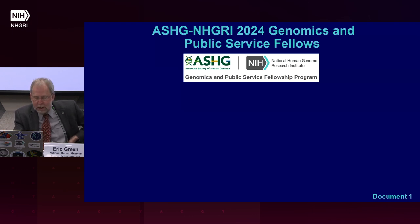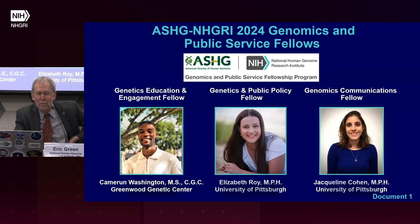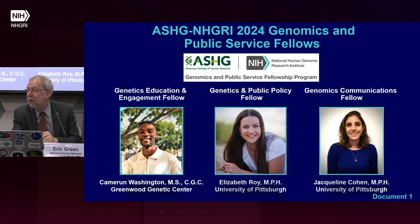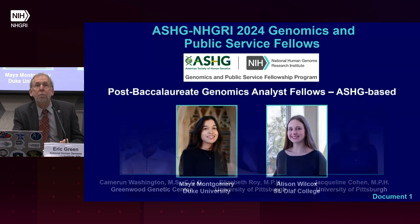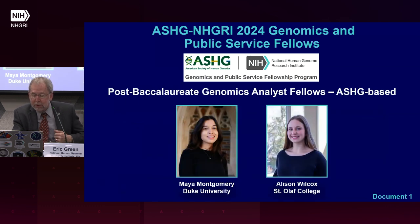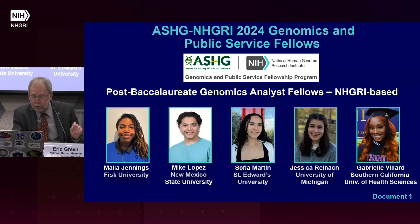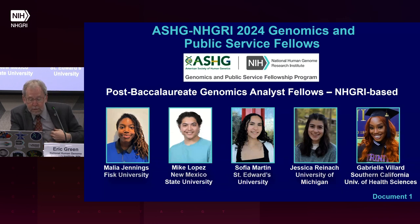There are 10 new fellows who will begin this July. The new graduate-level fellows are Cameron Washington as our Genetics Education and Engagement Fellow, Elizabeth Roy as our Genetics and Public Policy Fellow, and Jacqueline Cohen as our Genomics Communications Fellow. There will also be seven post-baccalaureate genomic analyst fellows: Maya Montgomery and Alison Wilcox will be based at the ASHG office, and five — Malia Jennings, Mike Lopez, Sophia Martin, Jessica Reinert, and Gabrielle Villard — will be based at NHGRI within our extramural research program.